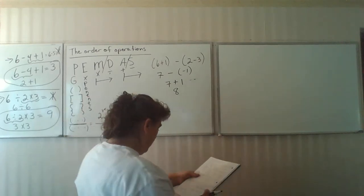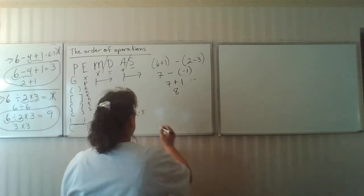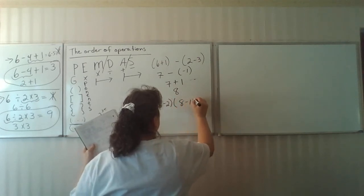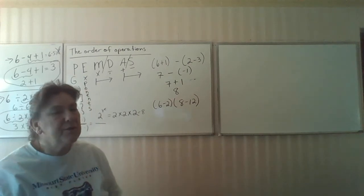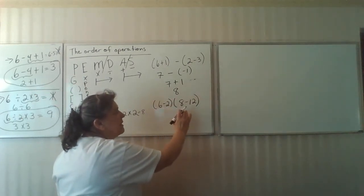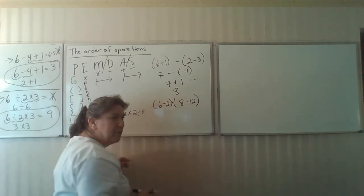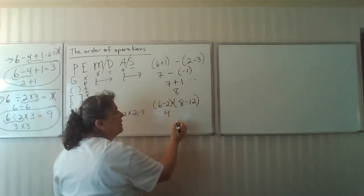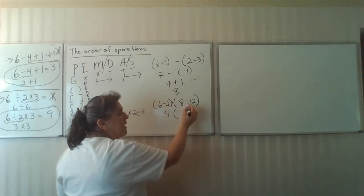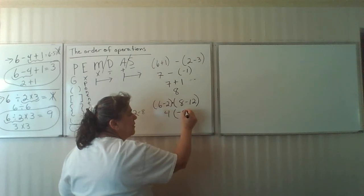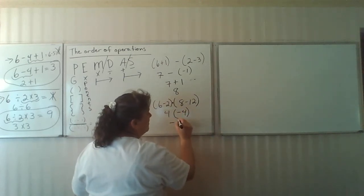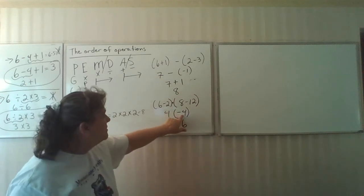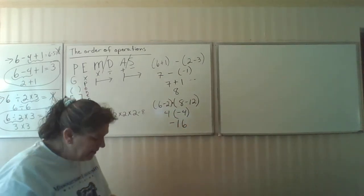How about this one? 6 minus 2, and then 8 minus 12. Now notice, both of these are inside parentheses and I have a parenthesis times. This is a times because remember that multiplication symbol can be parenthesis. And so 6 minus 2 is a positive 4. And I'm going to keep my parenthesis on this one because 8 minus 12 is a negative 4. And 4 times a negative 4 is going to yield me a negative 16. Why? Because I have one negative and 4 times 4 is 16.